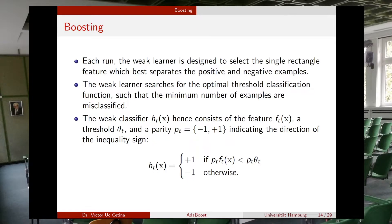The parity parameter indicates the direction of the inequality. If P is plus one, the inequality requires F to be less than theta. If you change the sign to minus one, then to satisfy the inequality you need F to be larger than theta. Simply by changing the sign you flip the inequality direction.